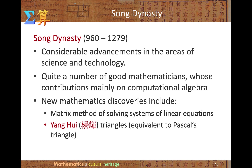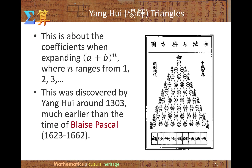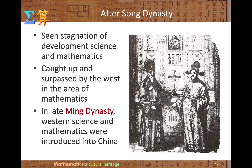The Song dynasty lasted over 300 years with considerable advances in science and technology. There were a number of good mathematicians whose contributions were mainly in computational algebra. New mathematical discoveries included a matrix method for solving systems of linear equations, and the Yang Hui triangle, equivalent to Pascal's triangle. This figure shows the coefficients when expanding (a + b)^n for n = 1, 2, 3, and so on: 1; 1,1; 1,2,1; 1,3,3,1; 1,4,6,4,1 — and so on. This was discovered around 1303, much earlier than Pascal. After the Song dynasty, there was stagnation in science and mathematics, and China was caught up and surpassed by the West.